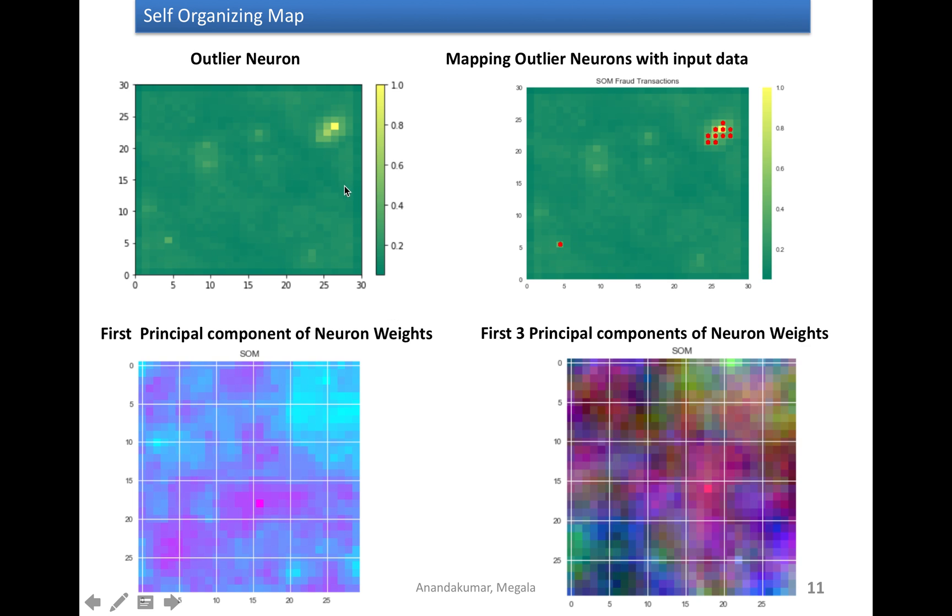So I plotted this graph. This graph is drawn based on the weight distance of each neuron. When the weight distance of a particular neuron is very high corresponding to its neighborhood neuron, then its value would be very high. And very high values are represented by very light color in this graph, which indicates these are the outliers.